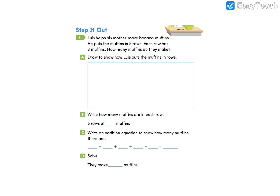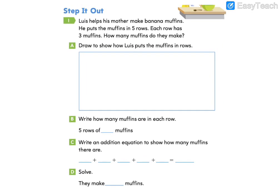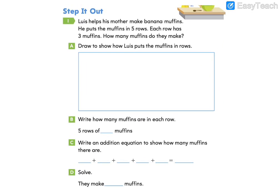We're starting with the step it out problem on page 57. The problem reads, Luis helps his mother make banana muffins. He puts the muffins in 5 rows. Each row has 3 muffins. How many muffins do they make? Letter A wants us to draw to show how Luis put the muffins in rows.